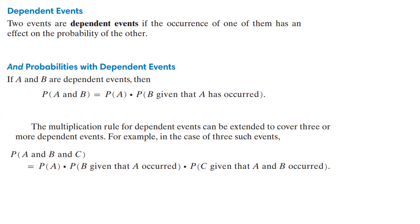We have P(A and B and C) equals P(A) times P(B given that A occurred) times P(C given that A and B occurred). So we have a little bit more complex stuff to think about here.